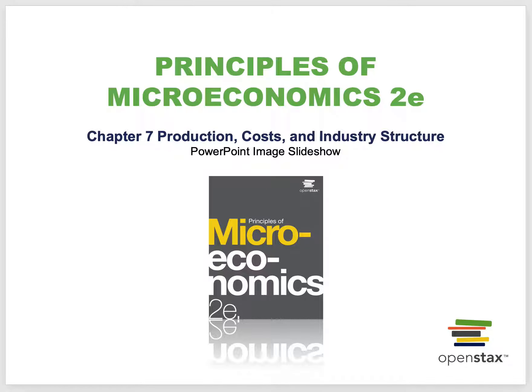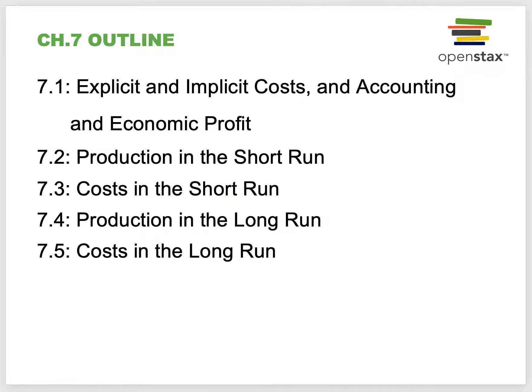This is Professor Gabor. I want to present Chapter 7, Production Costs and Industry Structure from our textbook in microeconomics. Here are the things we want to talk about: explicit and implicit costs and the difference between accounting and economic profit, production in the short run, costs in the short run, production in the long run, and costs in the long run.